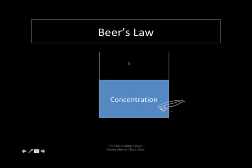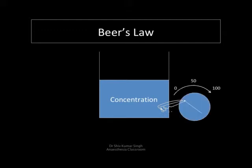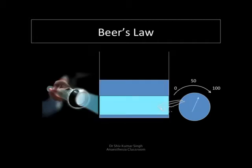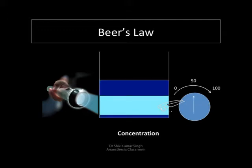Now let's look at these two laws separately. In Beer's law, we have a substance of known concentration in a beaker. When we shine a light through this beaker, a certain amount of the light will be absorbed by the substance and the intensity recorded on the other side is reduced. Now if we increase the concentration of the substance, the amount of light absorbed is further increased and the recorded intensity is reduced further.